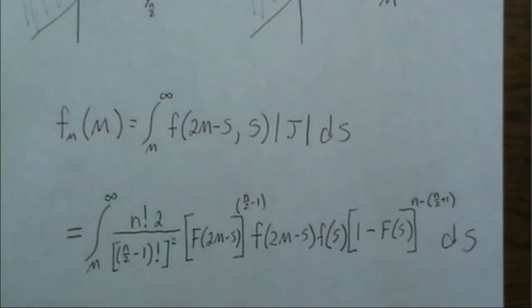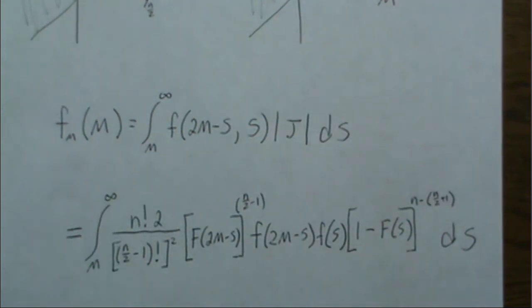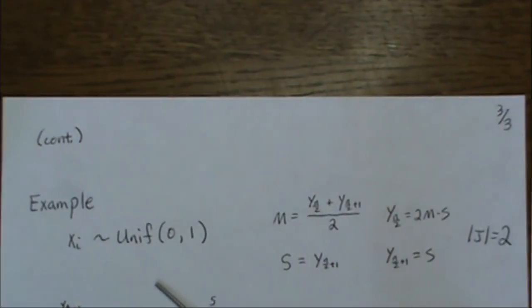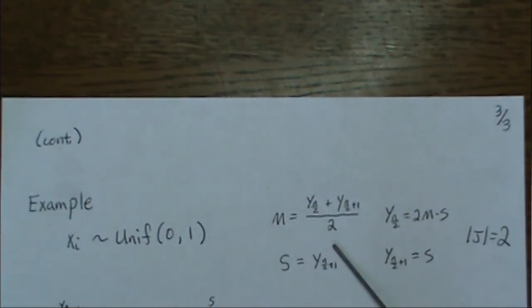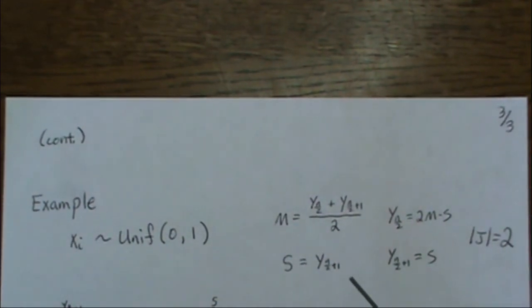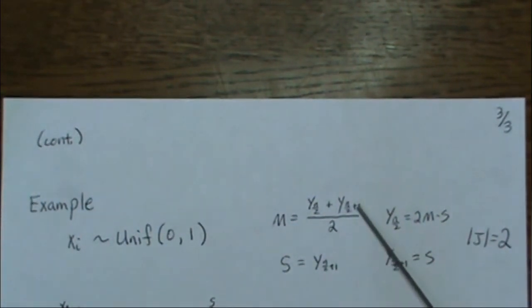So let's do an example. Here we're going to let Xi be uniform. And so our mapping becomes this. We want the middle value. And we're going to assume we're in a sample that's even, because if it were odd, then it becomes pretty straightforward what our equation is.